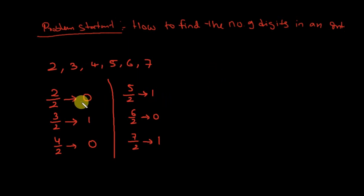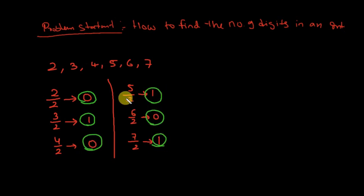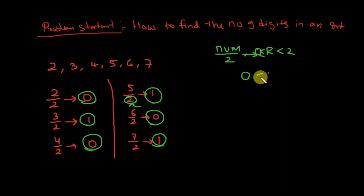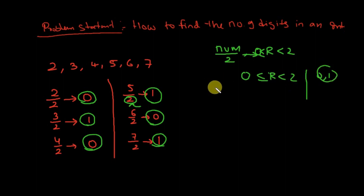The observation is: every remainder is less than 2, which is the number we are dividing by. Whenever we divide any number by 2, the remainder is between 0 and less than 2. So the possible remainder values are 0 and 1.